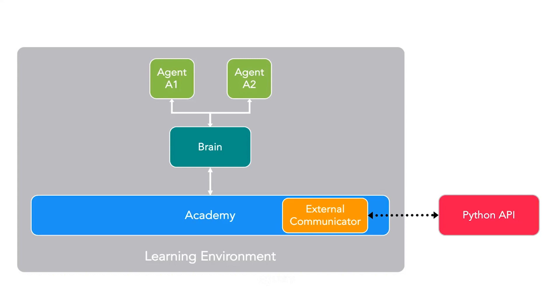With these brains, we need things to actually take these decisions and act on them in the world, and these are our agents. Each agent observes the world at any given step of the simulation, and uses that observation via the brain to take actions in the world.